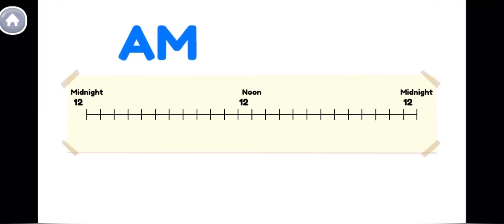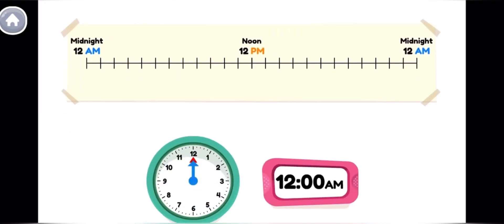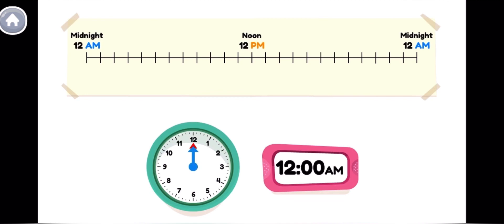Let's learn about a.m. and p.m. This is 12 midnight, which is 12 a.m. It's nighttime.